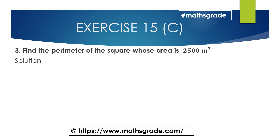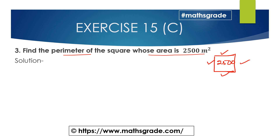Now we will solve question number 3: find the perimeter of the square whose area is 2500 meter square. This is the square and the area is given as 2500 meter square. First we have to find the side, and we know all sides of the square are equal.